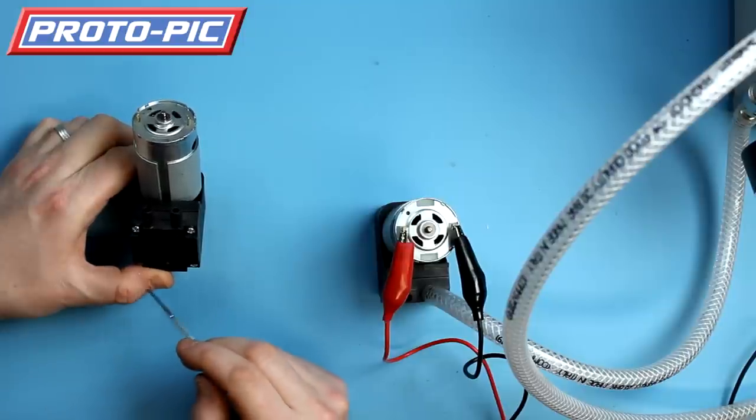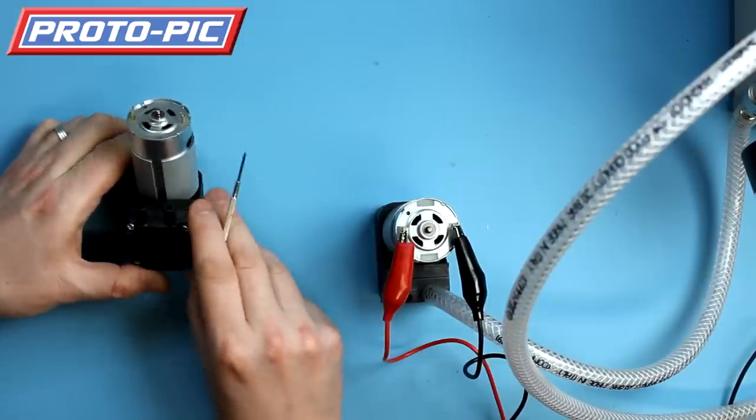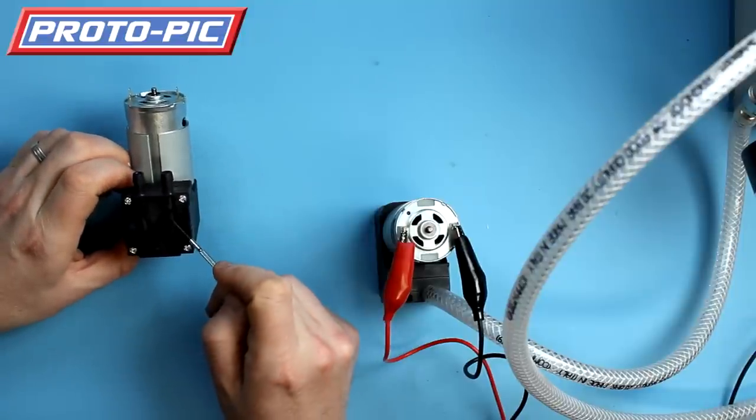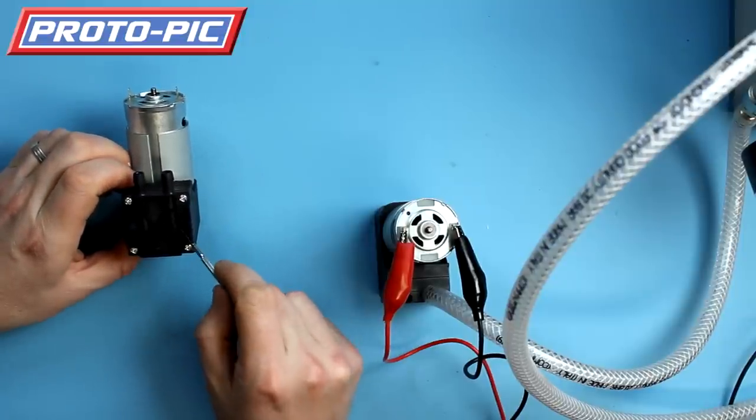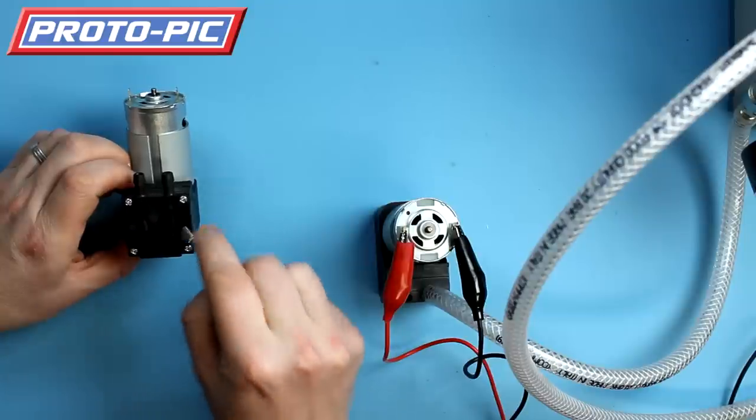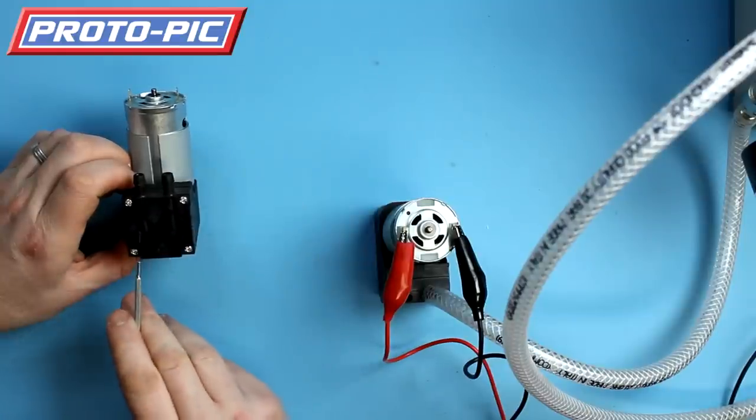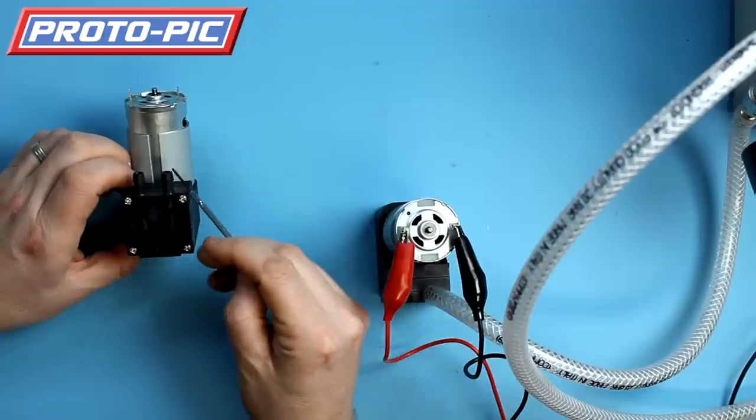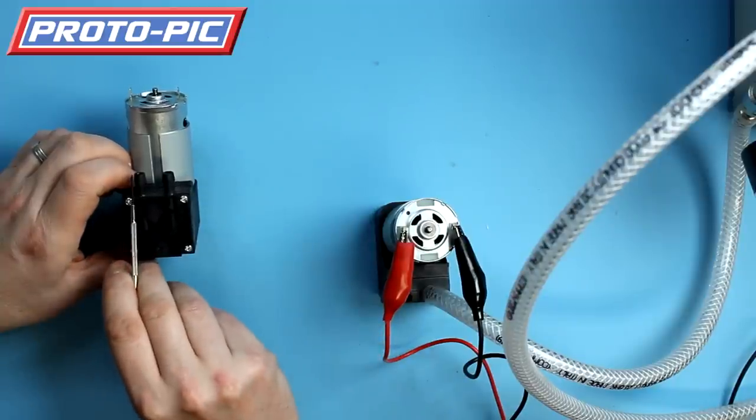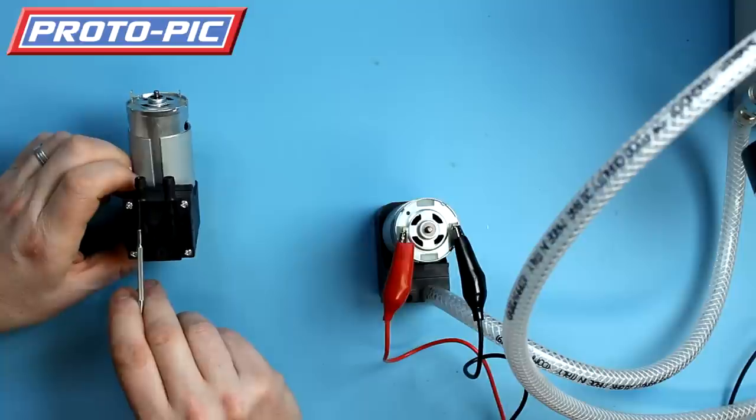The two hose barbs here—if you look on the base molded into the plastic body, you can see direction arrows. There's one pointing into the base of the pump and one pointing out. The one pointing into the pump is the inlet, and this one is the exhaust port.